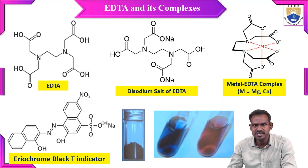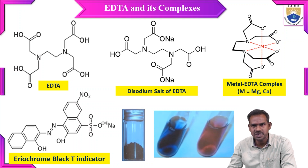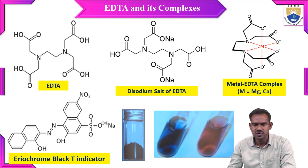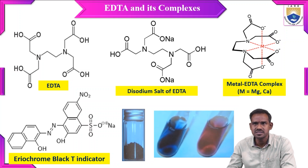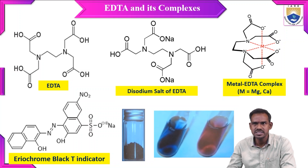Basic pH is the favorable pH where EDTA favorably binds with the hardness-causing cations. We take the water sample, add EBT indicator, and also add a basic buffer solution which is ammonia buffer solution. At this particular basic pH, EDTA prefers to bind with the hardness-causing cations.